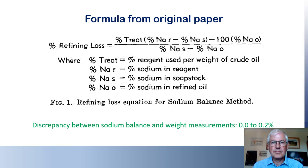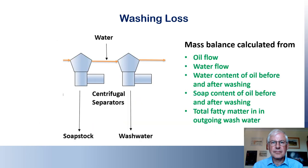One more thing to consider is water. Water is sometimes added to soap stock to make it easier to flow, and the oil at the exit of separators usually contains more water than unrefined oil, so this has to be taken into account when making a full mass balance. Oil at the exit of the first separator can still contain a significant amount of soap, which can be removed by mixing the oil with hot water and then performing a second separation. The losses are much less than those in the soap stock separator and can be easily calculated from flow and composition data.